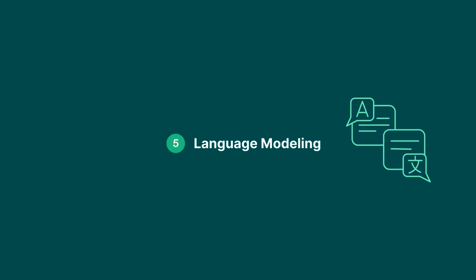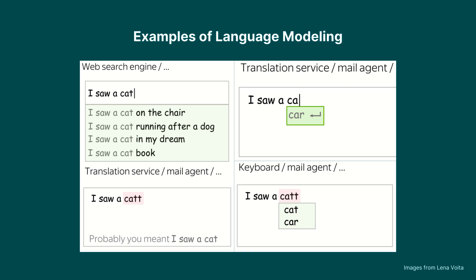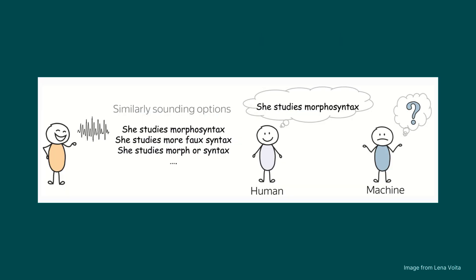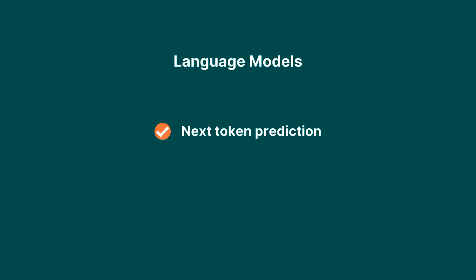One other thing you can take a look at is language modeling. We have been seeing great results in NLP tasks with language modeling. A language model is basically a model that has the ability to holistically understand language in a better way. These models are trained on placeholder tasks, such as next token prediction or masked language modeling, but at the end they are used for other tasks, such as question answering.